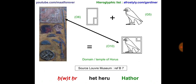Today we are looking at the word or the name Hathor. You have the Louvre Museum Artifact Reference B7 on the left of your screen. You have the arrow so you can see how the symbol looks in the hieroglyphic transcript. It is the Gardiner reference O10, which is actually made up of two glyphs: the O6 glyph, which alone stands for Het or Hut meaning domain or temple, and additionally the glyph G5, which alone stands for Her or Heru — what the Greeks call Horus.